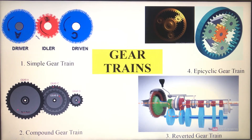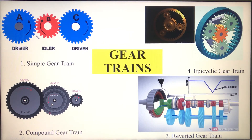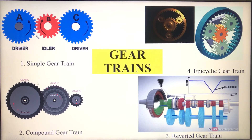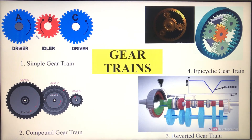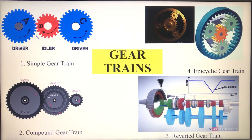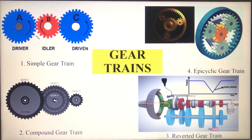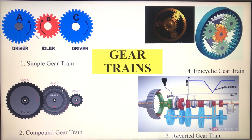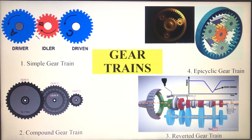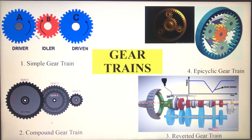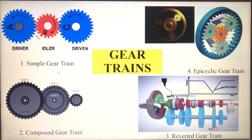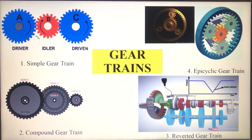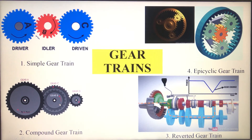Next is compound gear trains. In case of compound gear trains, the intermediate shaft consists of two gears, out of which one gear will act as follower and the other one will act as driver. For example, gear A meshes with gear B — gear A will act as driver and gear B will act as follower, which is mounted on the intermediate shaft. Similarly, gear C on the intermediate shaft will act as driver and gear D will act as driven. This compound gear train is preferred over simple gear train when you require a greater velocity ratio — that means when you want to increase or decrease the speed from one shaft to another.